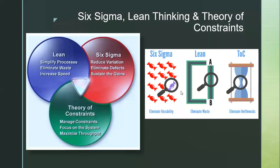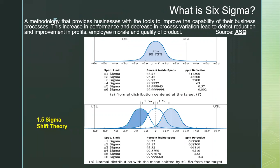Now I will discuss these three programs briefly one by one. Six Sigma is a data-driven method — it is also called a 'high-hanging fruit' because it requires high-quality skills in data analysis. The ultimate target of Six Sigma is to reduce process variation and decrease process variability so we can improve product quality and gain more profit.